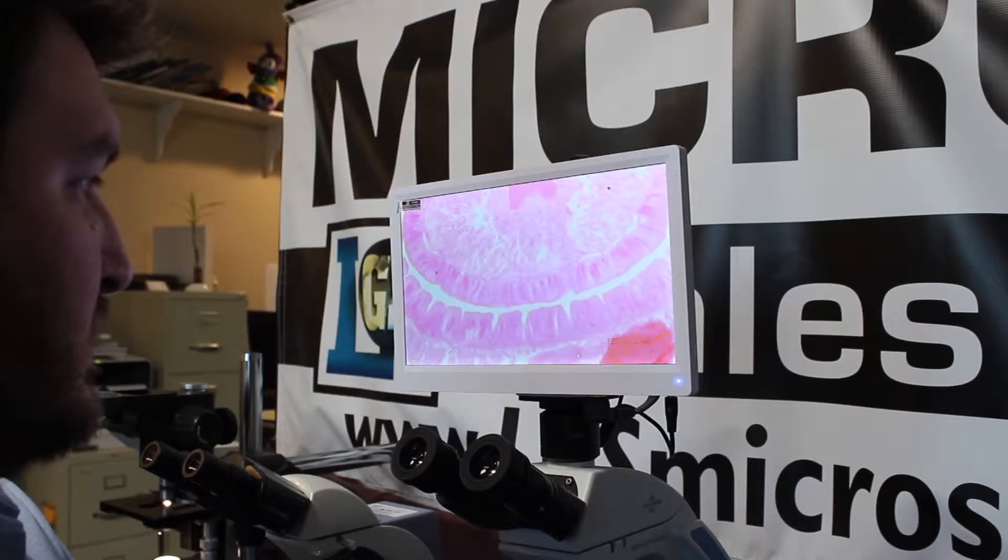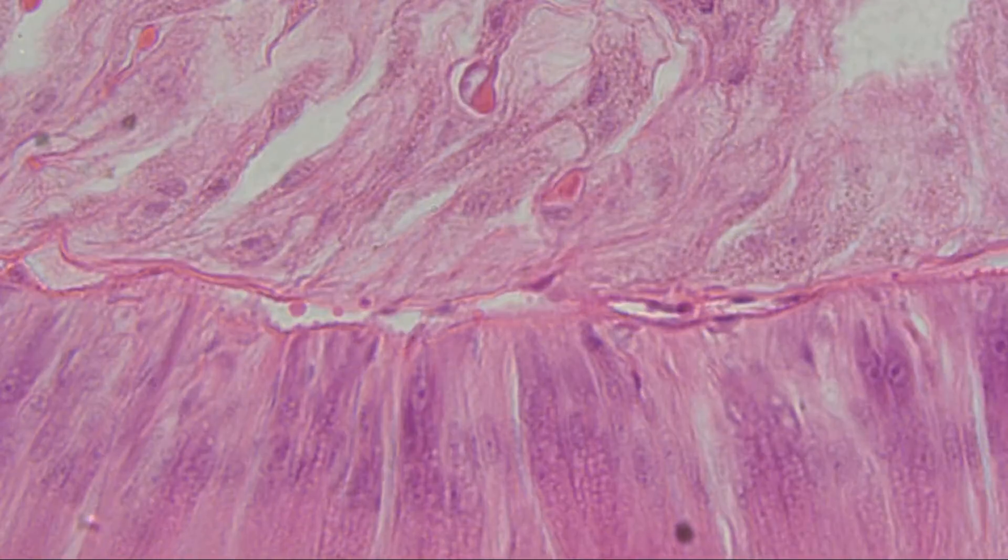So for our comparison we're just going to look at this slide of an earthworm cross-section. For this example we're just going to use 40x magnification.